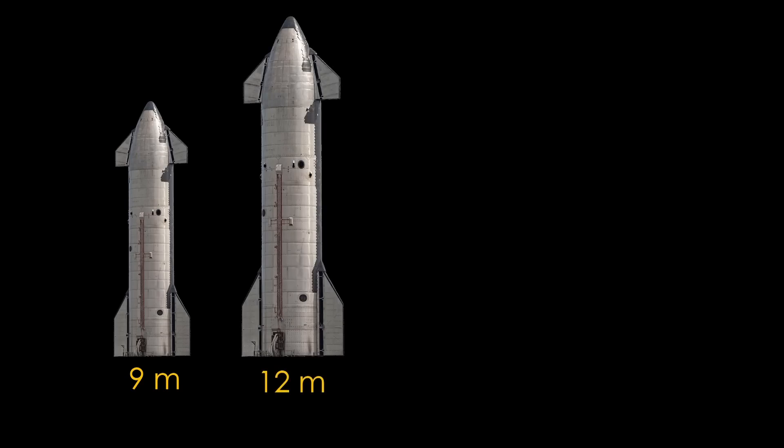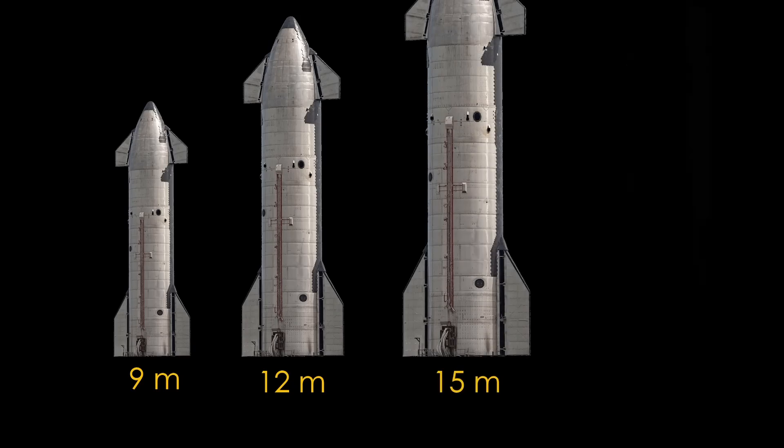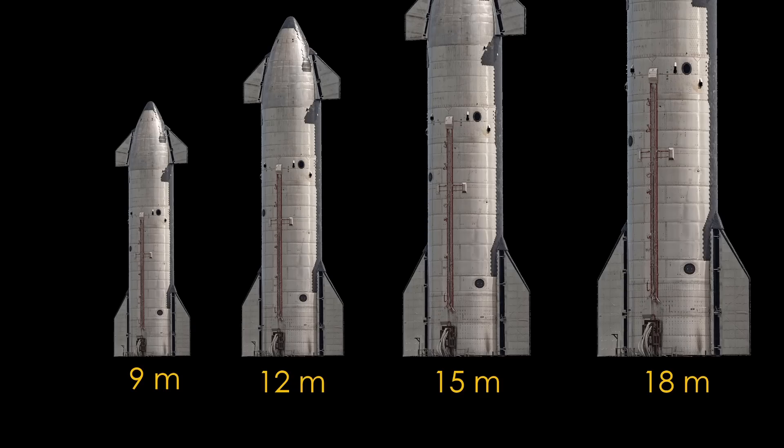SpaceX's current Starship is 9 meters in diameter. SpaceX has plans to stretch both Starship and Super Heavy to make them slightly taller to carry more fuel, but Musk has talked about versions that would be bigger in diameter. Starship already has the biggest rocket ever, and handling it poses some unique challenges.